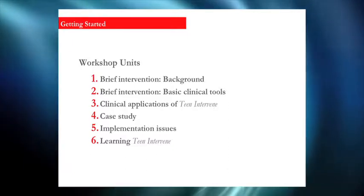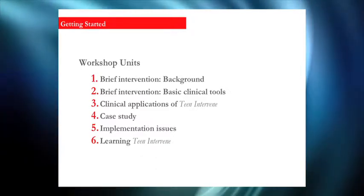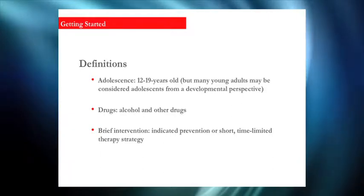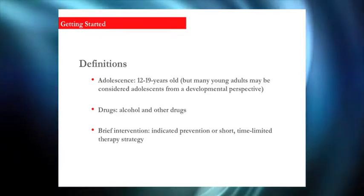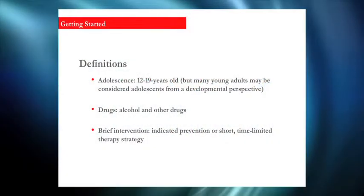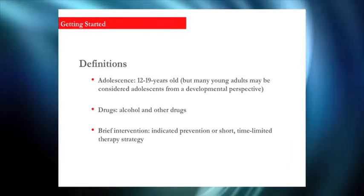There is some background I want to get through fairly quickly, to remind you of the scope of this work. When I refer to adolescence, I'm talking about 12- to 19-year-olds, or roughly middle to high school age. We originally thought about using this with teenagers living at home in the typical life of a teenager, not college students. When I use the term drugs, I do mean alcohol — it's alcohol and other drugs, although if I get specific I'll try to be more precise.